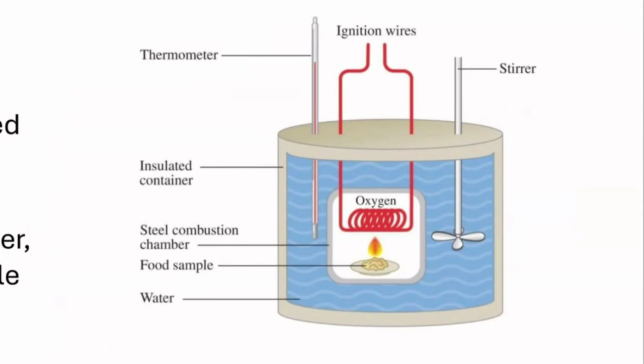Inside a calorimeter, we're going to have a steel combustion chamber, which is a chamber where a chemical reaction called combustion is going to occur. In order for combustion to happen, we need oxygen. When a food sample is placed in this steel combustion chamber, due to the presence of oxygen, that food sample will ignite. We can see this little flame as the representation of the ignition of the food sample.